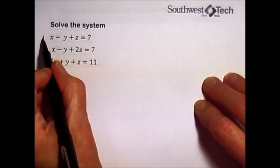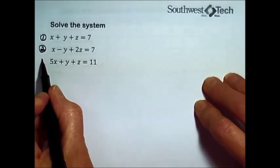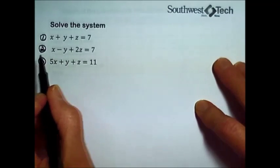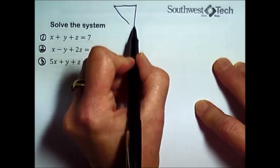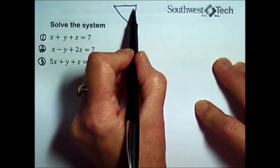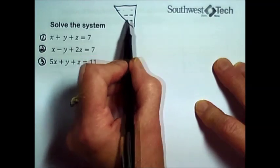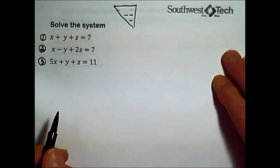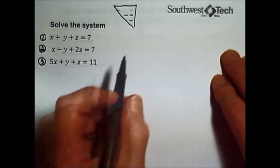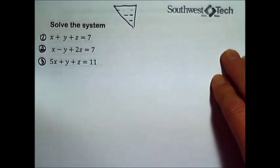I'm going to number the rows to help us keep track of what's happening. I want to get this in that triangular form where the first equation has all three variables, the next equation only has two variables, and the third equation only has one variable so that we can solve for that, plug it in, and work our way back up through the funnel.